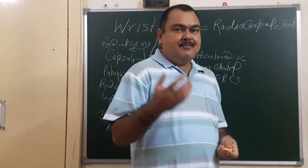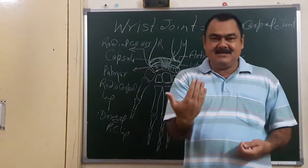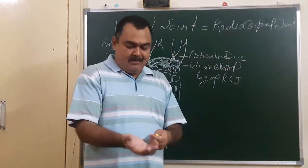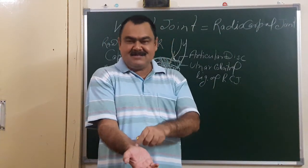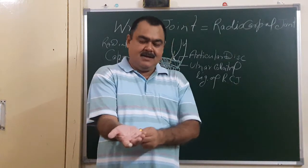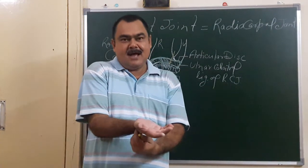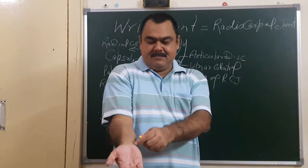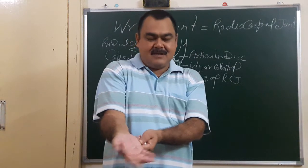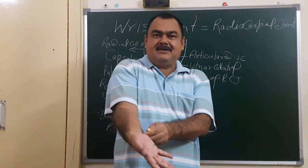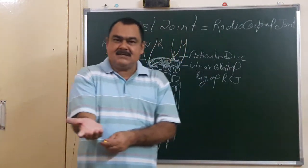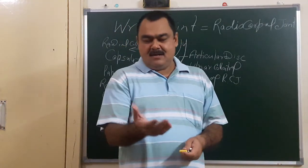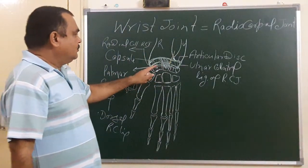The movements at this joint are flexion, extension, adduction, and abduction. For flexion, the muscles mainly involved are flexor carpi ulnaris, flexor carpi radialis, and palmaris longus. For extension, the muscles are extensor carpi radialis longus and extensor carpi radialis brevis. For adduction, the muscles are flexor carpi ulnaris and extensor carpi ulnaris. For abduction, the muscles are flexor carpi radialis, extensor carpi radialis longus, and extensor pollicis brevis. So this is all about the radiocarpal joint.